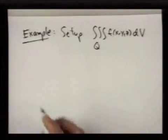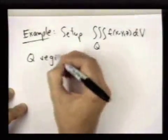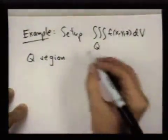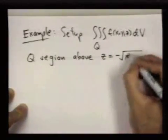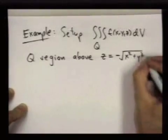Where Q is the region above the graph z = -√(x² + y²).